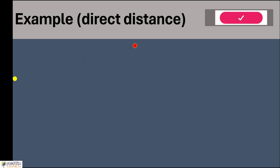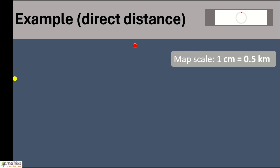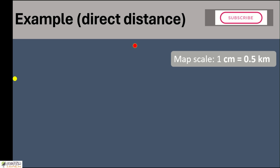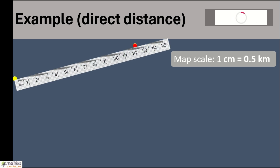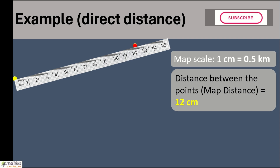Now let's take an example to calculate direct distance. Imagine there are two points on a map — a yellow dot and a red dot — and the scale is 1 centimeter equals 0.5 kilometers on the ground. Direct distance means distance in a straight line between any two points. The first task is to place a ruler and measure the distance between the dots. In this case, the distance between the points is 12 centimeters — this is the map distance.